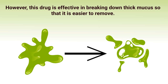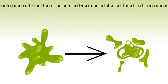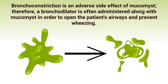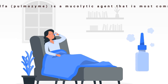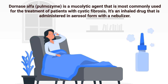Mucomist is known for its distinct foul-smelling odor; however, this drug is effective in breaking down thick mucus so that it is easier to remove. Bronchoconstriction is an adverse side effect of Mucomist, therefore a bronchodilator is often administered along with Mucomist in order to open the patient's airways and prevent wheezing.